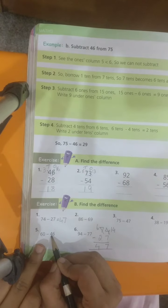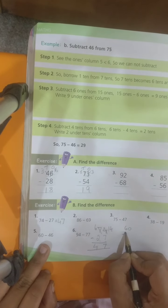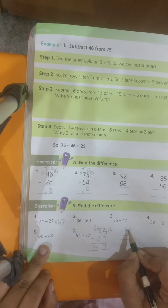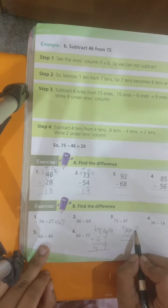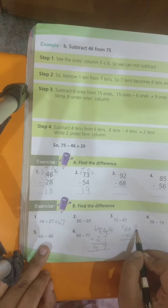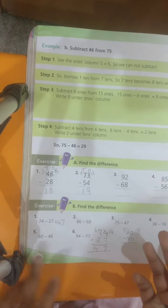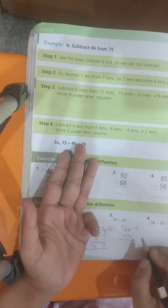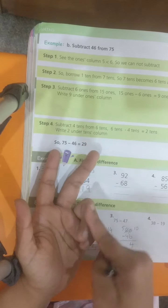Similarly, 60 minus 46. 0 is a small number. I should borrow. 6 gives 1. So, 0 becomes 10. 6 becomes 5. Now, 10 minus 6. You can open 10 fingers and close 6 fingers because it's easy. Answer is 4.